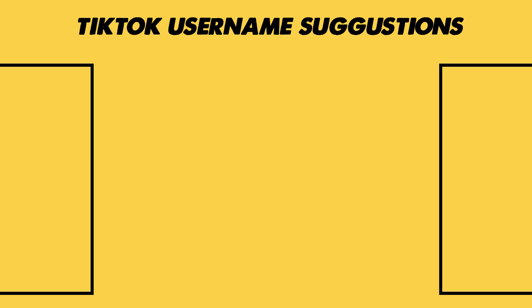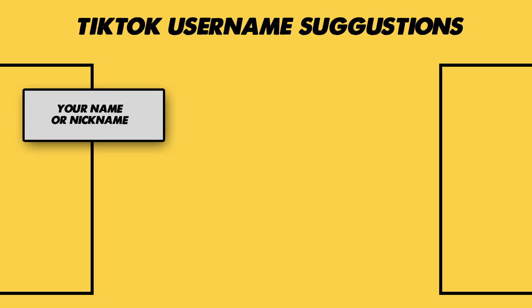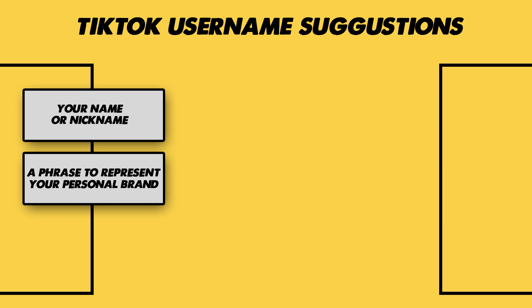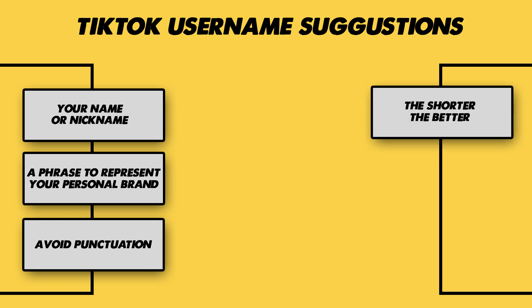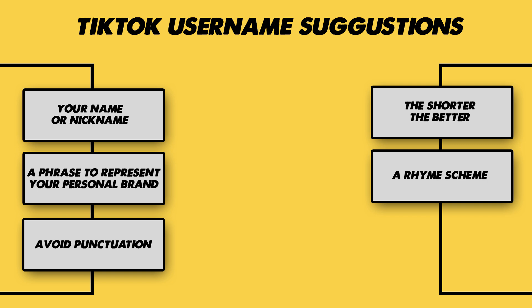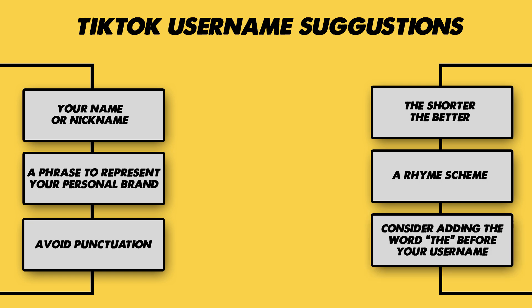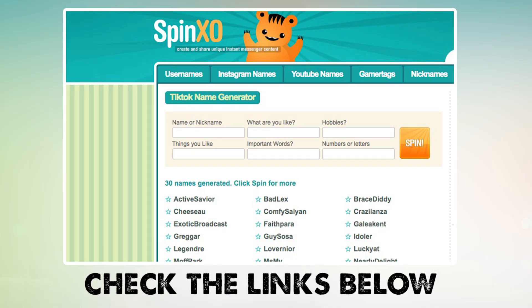Number one is fairly obvious: consider using your name or a short nickname. You might also consider using a phrase to represent your personal brand. No punctuation such as periods or underscores — those tend to detract from ease of remembrance. Generally, the shorter the better. You might also consider using some rhyme scheme in your username; 'makeup or breakup' is a great example on TikTok. If your name on the platform is already taken, consider using the word 'the' before your name or profession — such as 'the lawyer,' 'the dentist,' or in my case 'the Joseph Todd,' which is the result of me not being able to claim my full name. If you're looking for a tool to help you come up with great username ideas on TikTok, I'll link a website in the description below that generates available usernames on the platform. Check it out if you're interested.